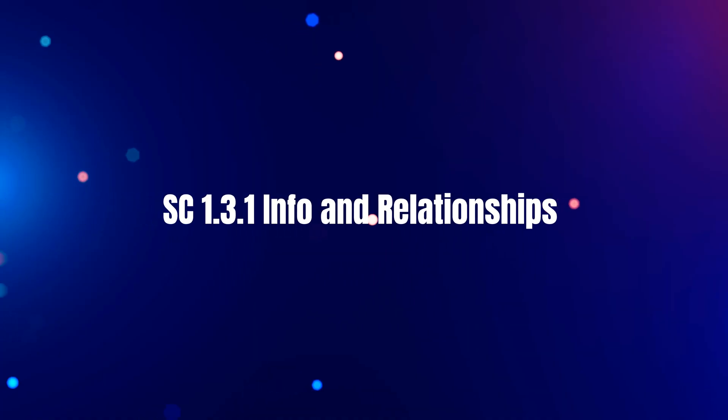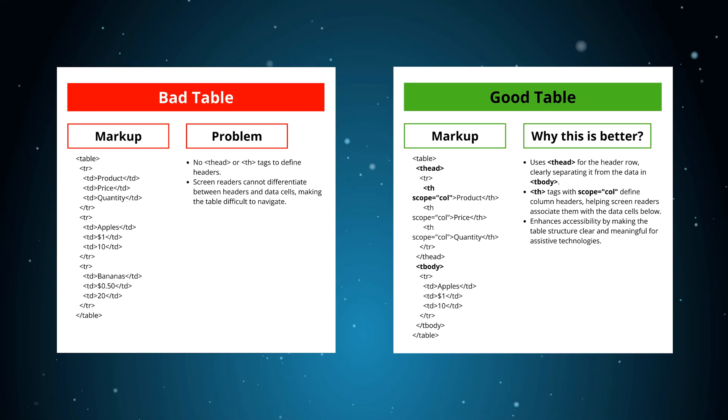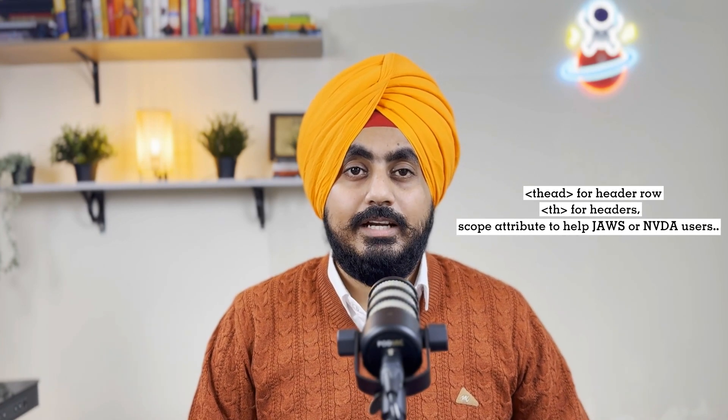Finally, we have info and relationships. Think about tables, headings, and lists — they must be coded so the structure is clear to everyone. Use proper tags: for example, 'thead' for header rows, 'th' for headers, and the 'scope' attribute to help JAWS or NVDA users. Screen readers rely on this structure to present content meaningfully to people with no vision. This is why I always recommend using HTML5 semantics when developing. If we're using HTML5 semantics, I'd give it a three on the scale.